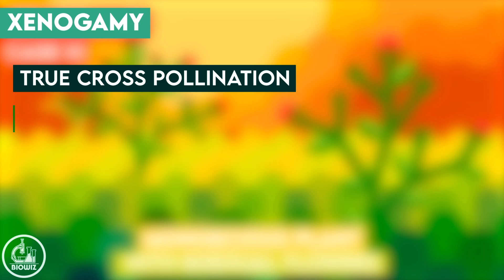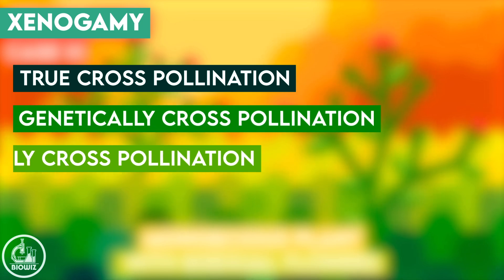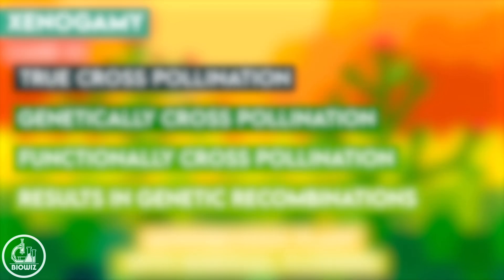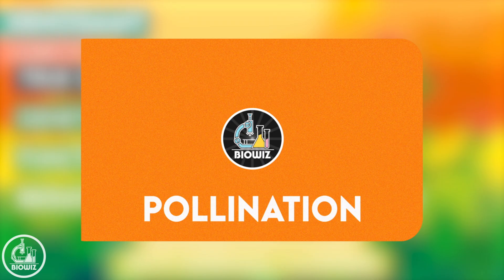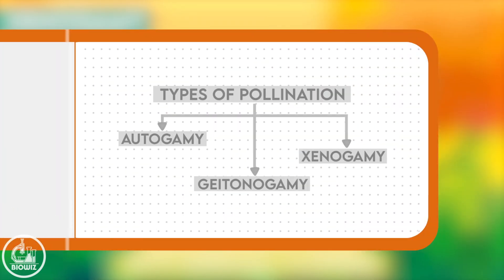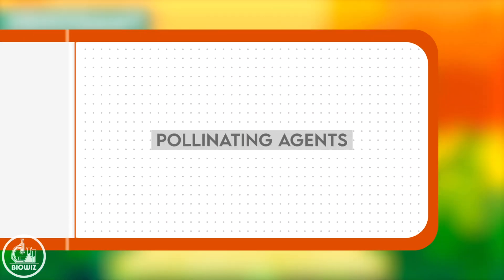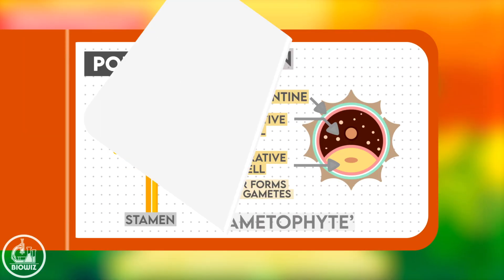So in the first part, we learned about the types of pollination, and the next question is: how does the transfer of pollen occur? The answer is with the help of pollinating agents.